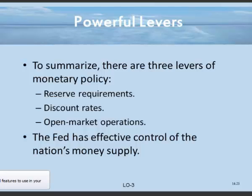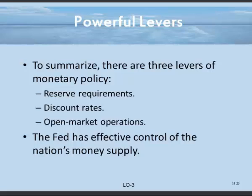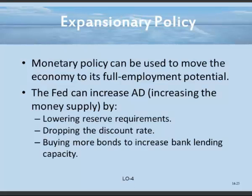If the problem was unemployment, what the Fed would want to do would be to increase aggregate demand. The way you would do that is by lowering the reserve requirement, lowering the discount rate, and buying bonds.